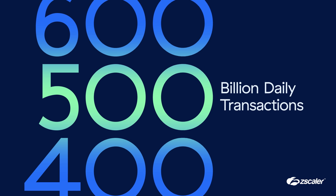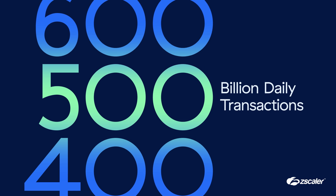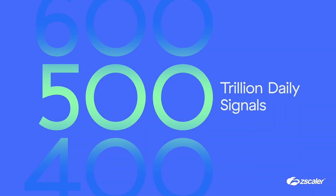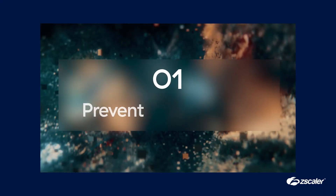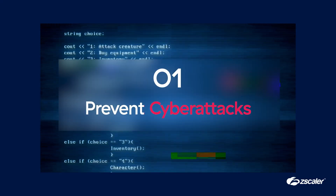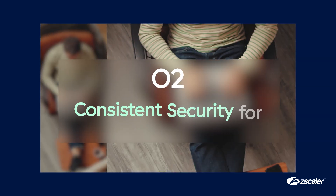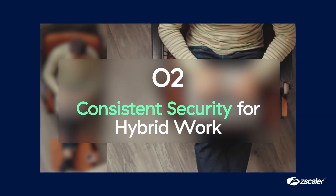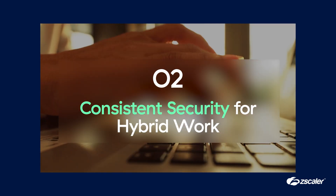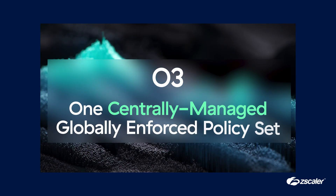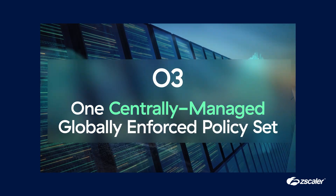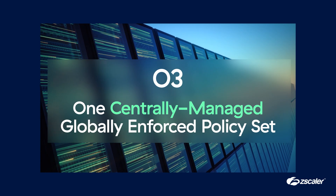With these capabilities and more, ZIA prepares you to meet modern security challenges in five key ways. One: inline security that protects you from cyber attacks, including AI attacks. Two: policy-based access for simple, secure user experiences, helping your people stay both safe and productive wherever they're working. Three: streamlined management and administration enabled by one centrally managed policy set, which is enforced at the edge by more than 150 data centers around the world.